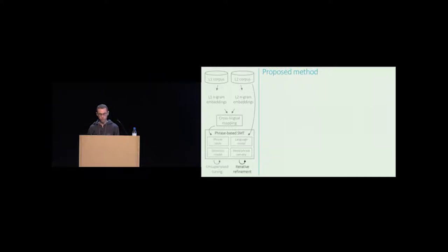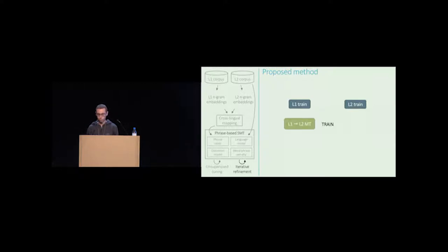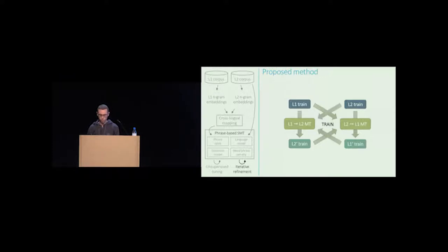Finally, we apply iterative refinement, which is the same basic idea applied at a more fundamental level. Standard supervised SMT uses parallel corpora for training, but we have only monolingual data. So we use our initial translation model to translate the monolingual corpus in language 1 to language 2, obtaining a synthetic parallel corpus, and use it to learn a new model from scratch in the other direction. We then translate the monolingual corpus in language 2 back to language 1, and keep repeating — this is essentially iterative back-translation.